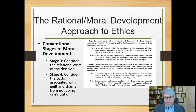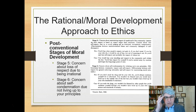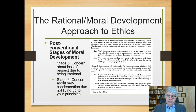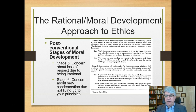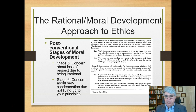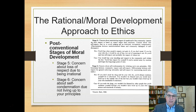Those are the conventional stages of moral development. What Kohlberg considered to be the superior levels are the post-conventional stages. Stage five is concern about the loss of respect due to being irrational, with a big emphasis on being rational. The reason for stealing the drug: you'd lose other people's respect if you don't steal — if you let your wife die, it would be out of fear, not reasoning. Or, reasoning about respect could lead you not to steal, because you'd lose your standing in the community and lose respect for yourself if carried away by emotion.